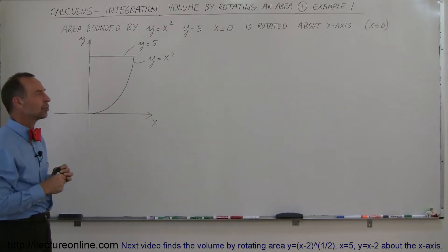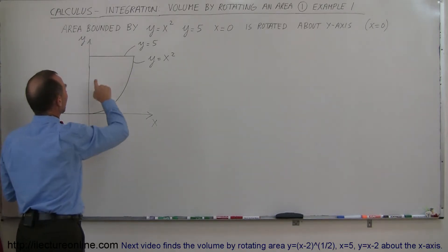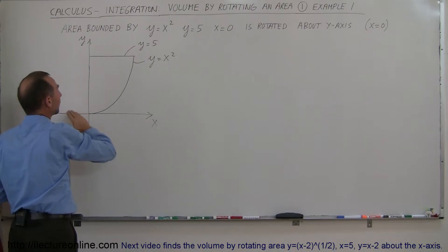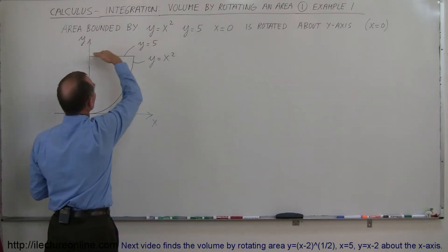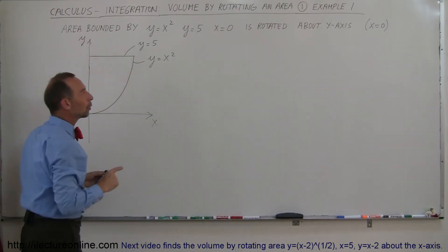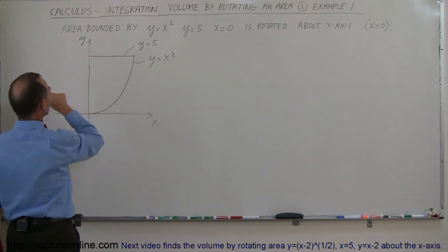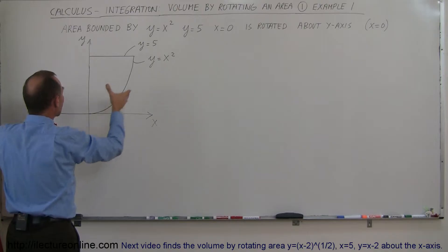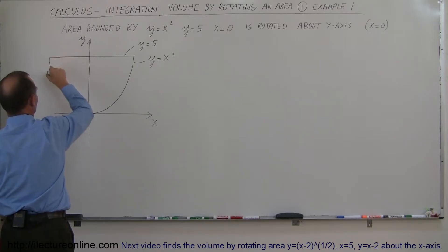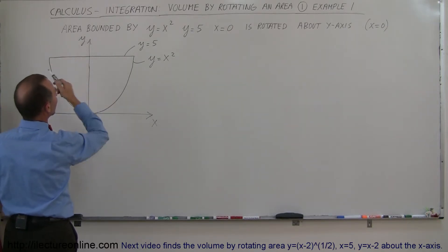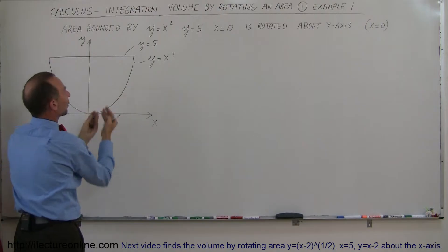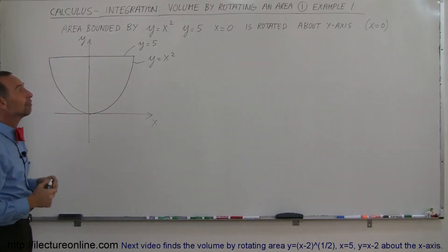That's really what it comes down to — a good technique on how to do that. Here we have an area bounded by the equation y equals x squared, which is a parabola. We did not draw the full parabola because we're also bounded by the line y equals 5 and the line x equals 0, which is the y-axis. So it's this area right here, and we're going to rotate that area about the y-axis. When we rotate it, we get a kind of bowl-shaped object — rotated all the way around, flat at the top and parabolic in shape. That's what we're trying to find the volume of.